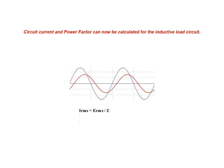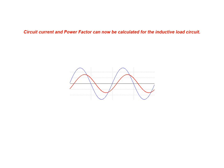We begin with the current magnitude and phase. Using the applied voltage and our calculated values for impedance magnitude and phase, we arrive at an RMS value of 69.112 milliamps at an angle of minus 37.886 degrees as our circuit current. We now evaluate the cosine of the phase angle to calculate the power factor, which ranges from zero for purely reactive power to a value of one representing true power. For this inductive load circuit we find that the power factor is equal to 0.789.